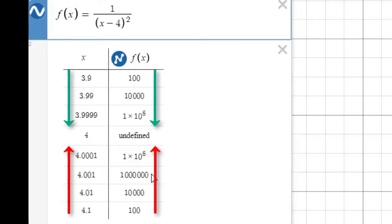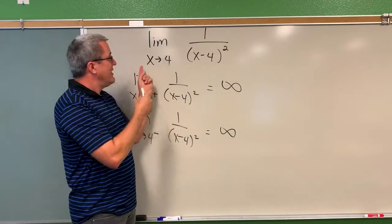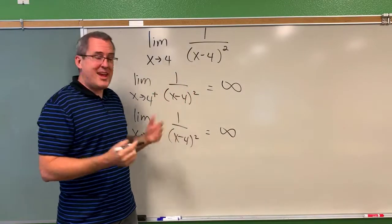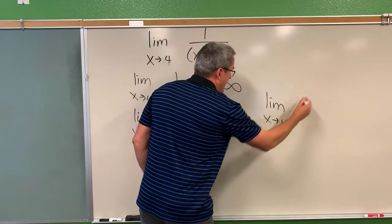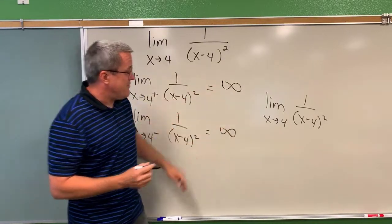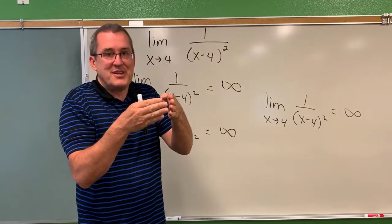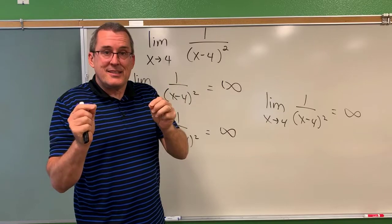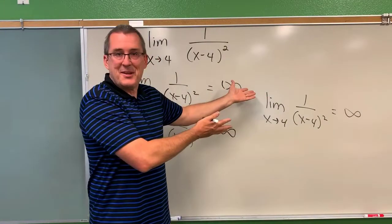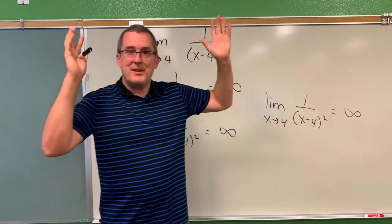Now let's talk about how we're going to record that understanding. We've confirmed that for input values nearby to 4, the output values for this rational function just explode — we say they approach infinity. We would say the limit as x approaches 4 of 1 over (x minus 4) squared equals infinity. Because from the left side and the right side they both blow up to positive infinity, we can say the limit is infinity. The limit doesn't exist in the sense that there's not a finite value the function is approaching, but because it blows up to positive infinity on both sides, we communicate that as x gets close to 4 from either side, this function just blows up and goes off to infinity.